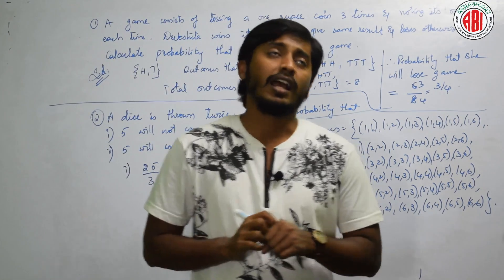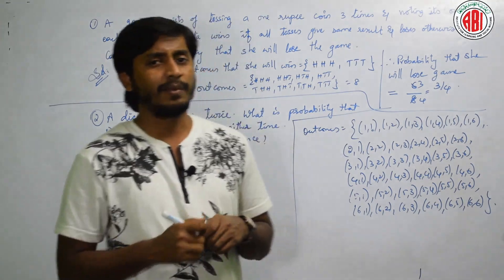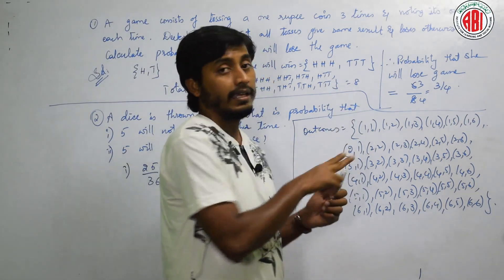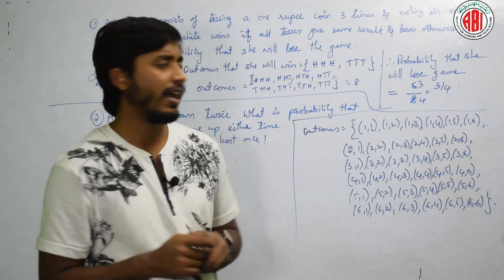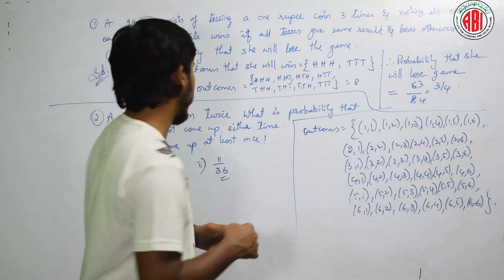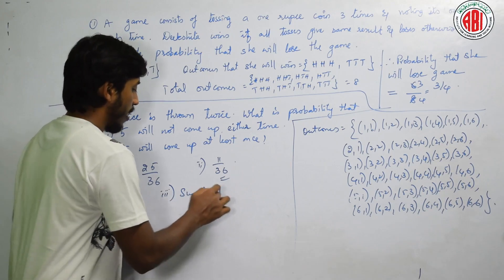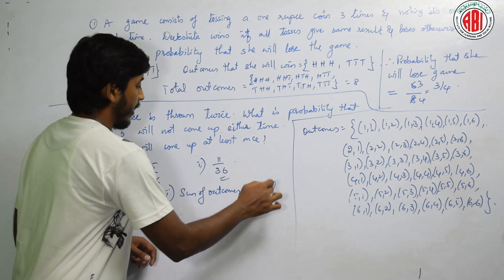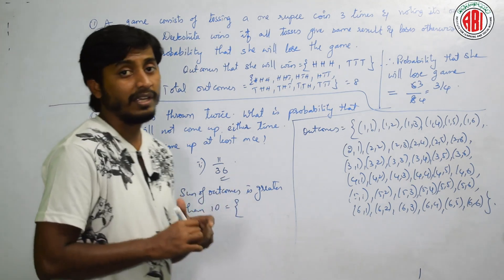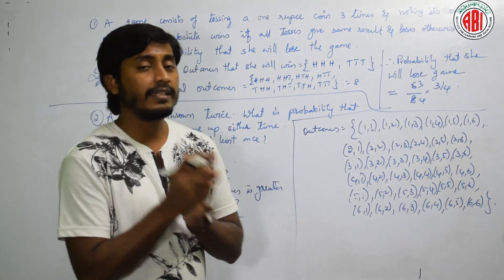And one more thing from this question, if 2 dice are thrown, they may ask you many questions. For example, if they ask you that sum of the outcomes of 2 dice is greater than 10. In which cases do we get more than 10? Let me write the third question: Sum of outcomes is greater than 10. What are the outcomes? Tell me, when do we get 10? 5,5, 6,4, 4,6.